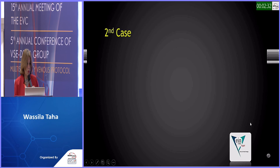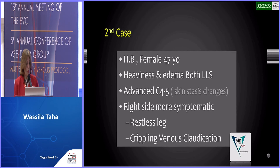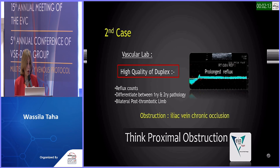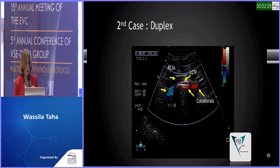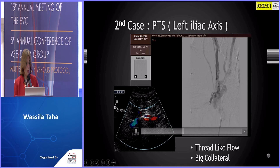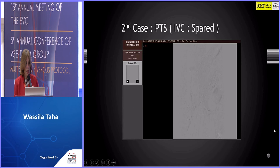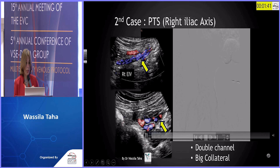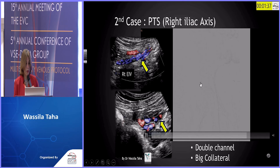The second case involves thrombotic or occlusive disease — a 47-year-old female with the right side more symptomatic than the left, with restless leg and crippling venous claudication. High-quality duplex confirmed proximal iliac vein occlusive disease. We proceeded to venography and stenting of the right side. Venography of the left iliac axis showed thread-like flow with large collaterals, correlating with duplex. The IVC was patent. On the right iliac axis — much more symptomatic — we found double-channel flow with large collaterals.